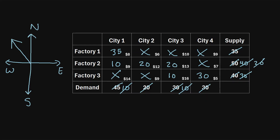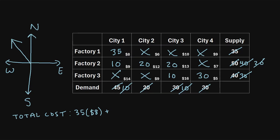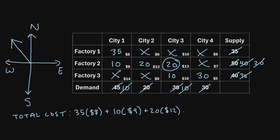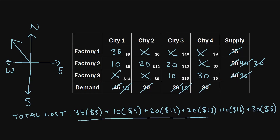This is our final answer. To find the total shipping cost, we take the total units in each allocated cell and multiply by the unit shipping price. That gives us: 35×8, plus 10×9, plus 20×12, plus 20×13, plus 10×16, plus 30×5. If you calculate all of this, it comes out to $1,180. That is our final answer — that's how we solve the transportation problem using the Northwest Corner method.